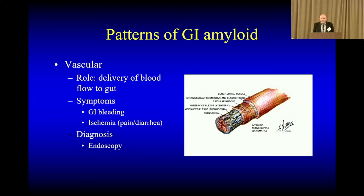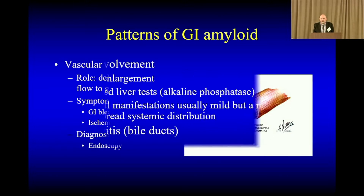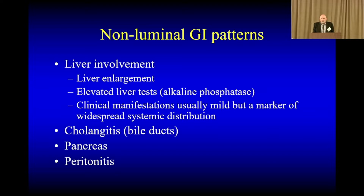And finally, with vascular involvement, if there is any involvement within the blood vessels, we'll typically see bleeding and ulcers. That's thought to be a little bit less common than the other pathways. We can also see deposition outside of the linear gut, looking at the liver, the pancreas, et cetera. It's not uncommon to see liver involvement. Most times the clinical manifestations are usually mild, but it can be a marker of distribution.